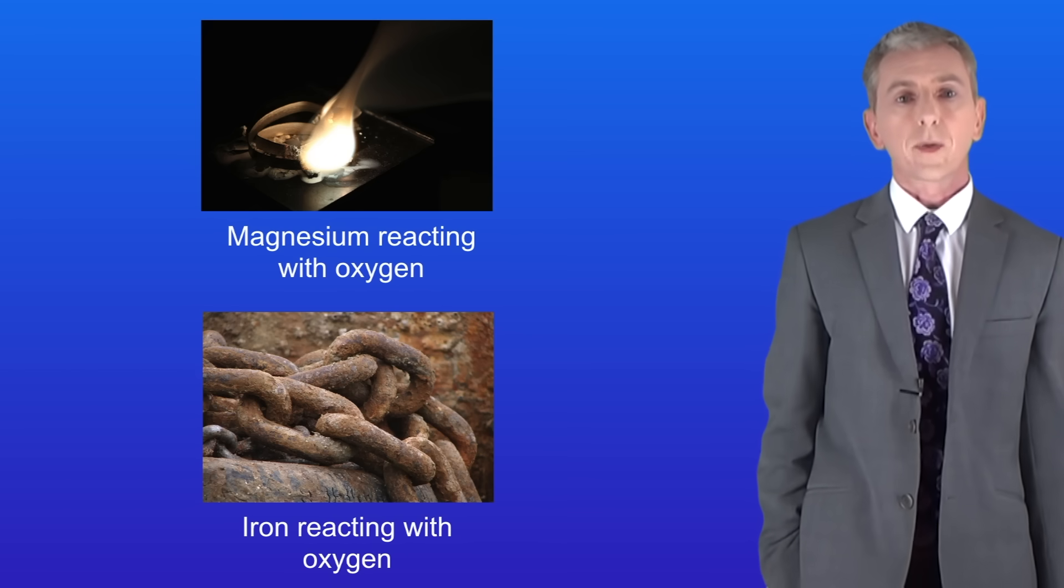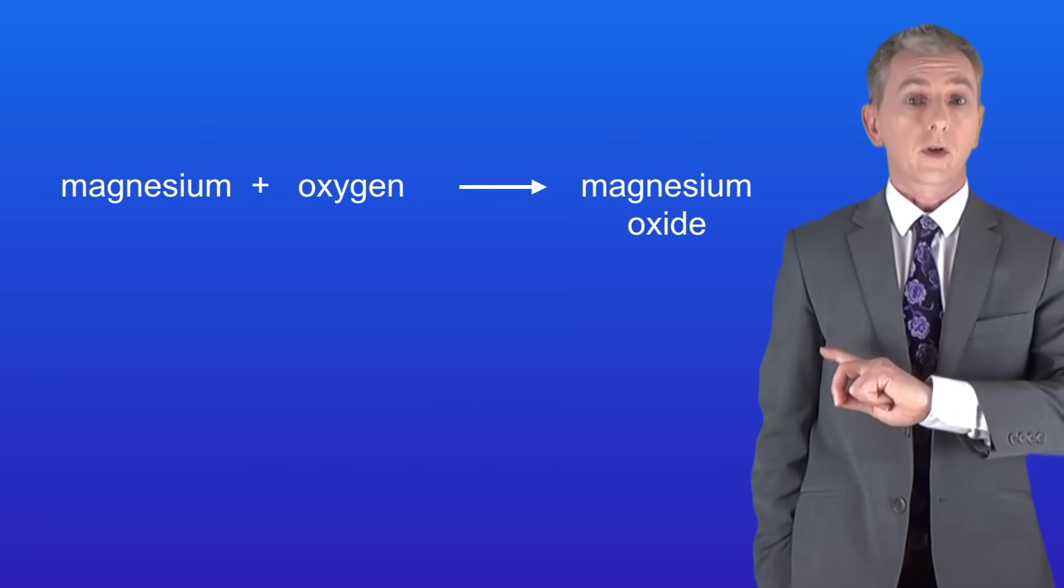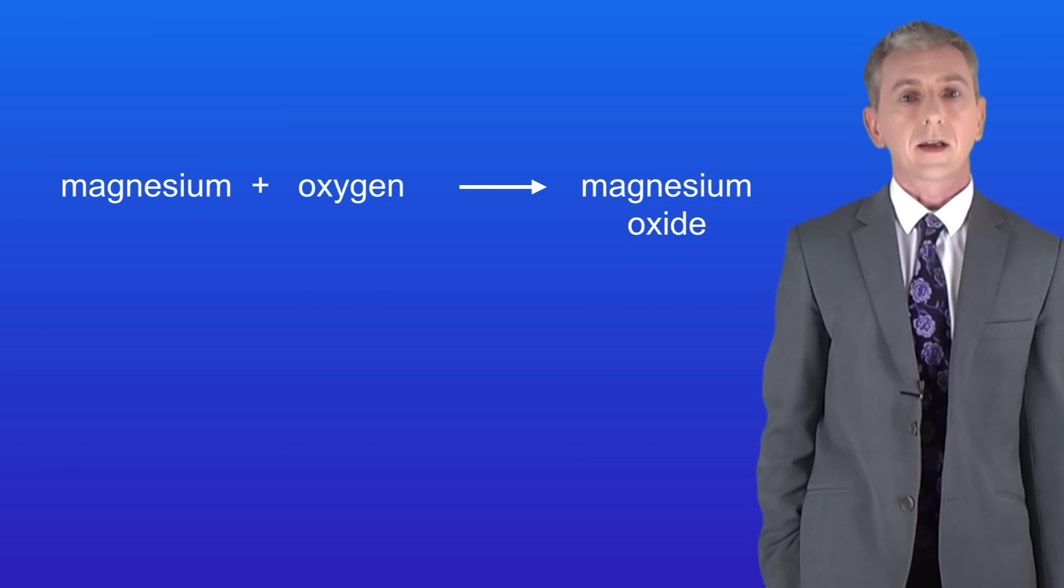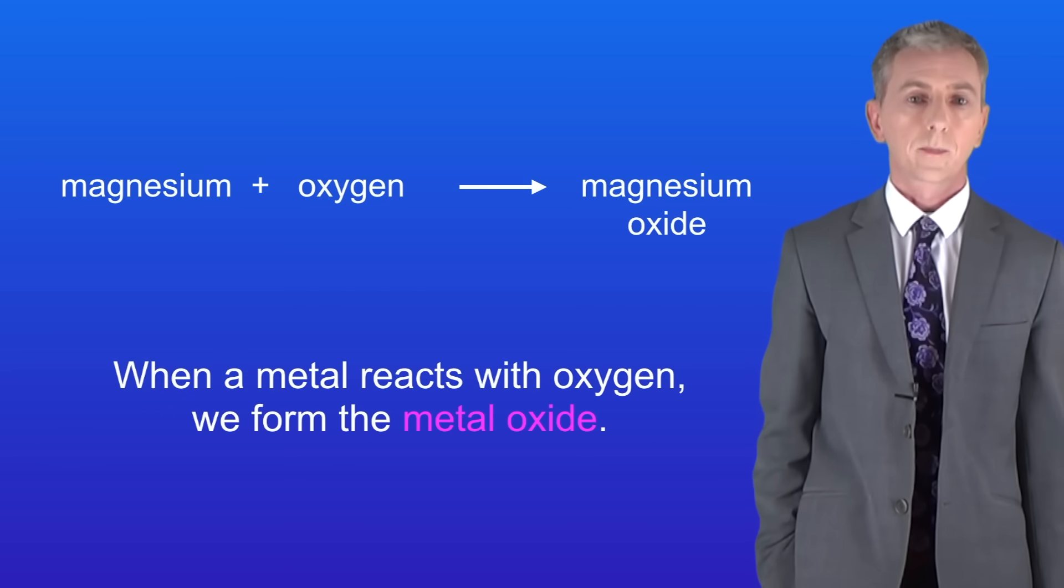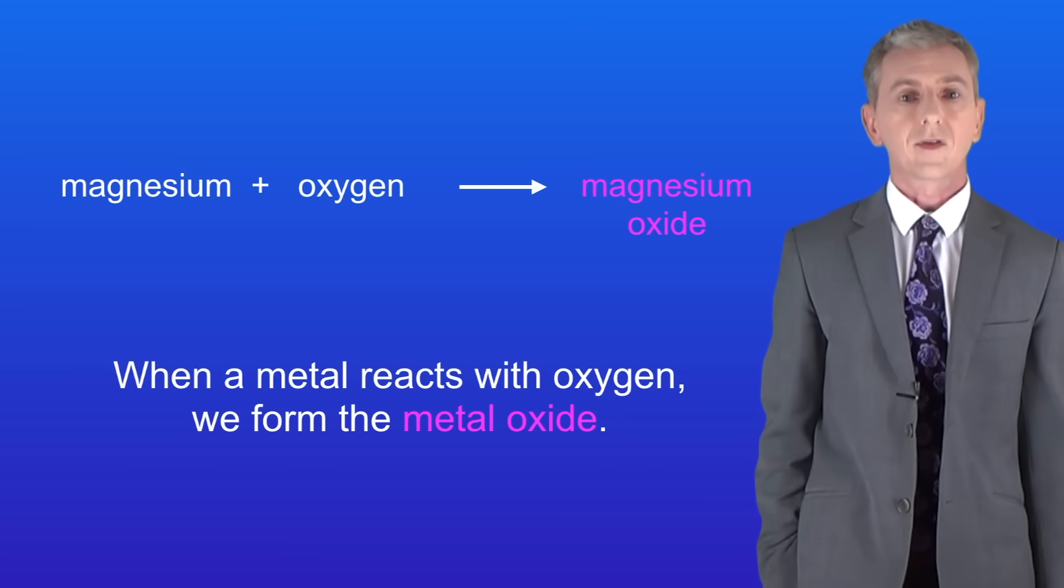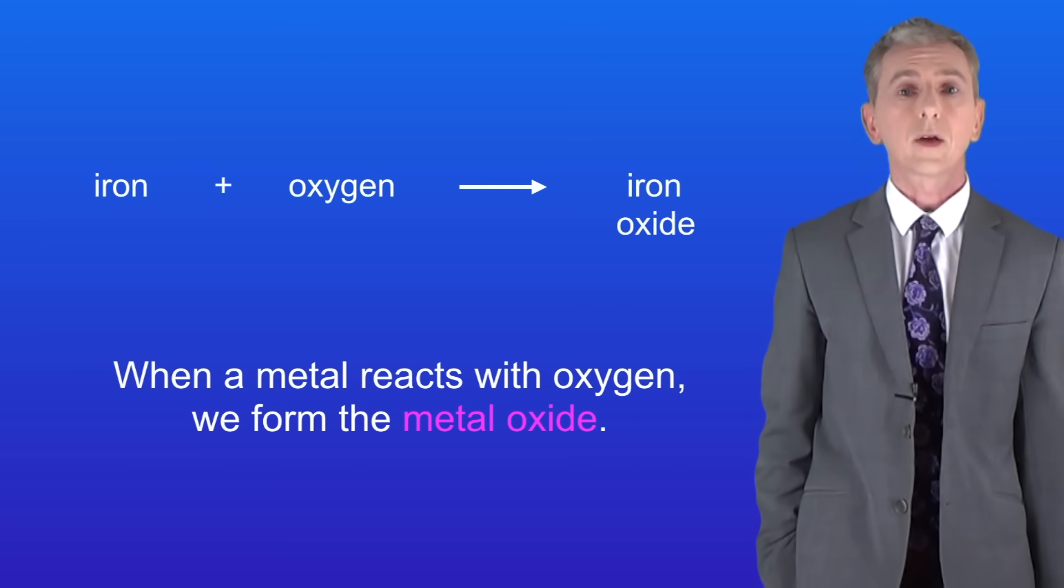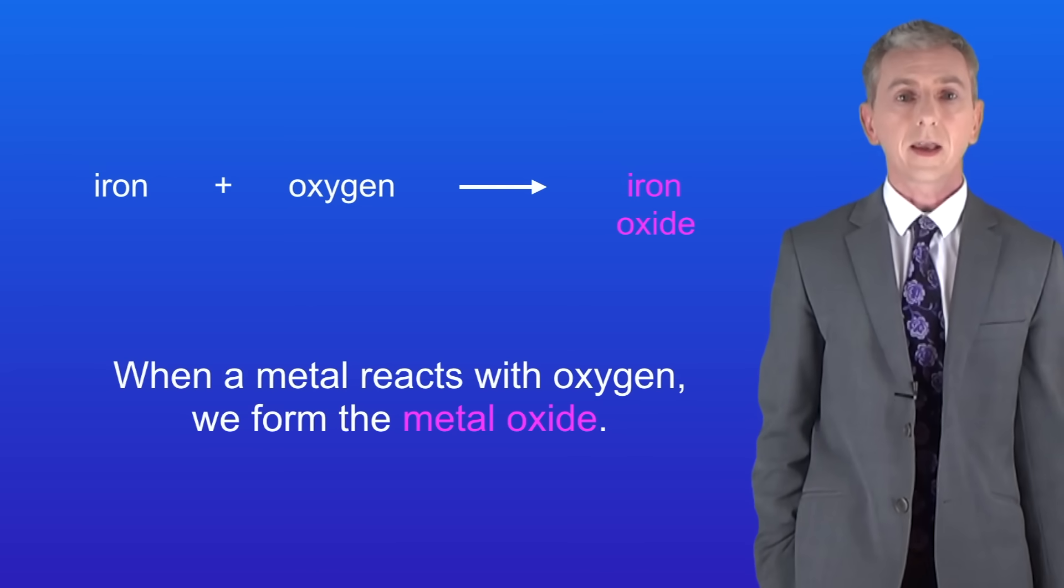So what actually happens when metals react with oxygen? This shows the chemical equation for the reaction of magnesium with oxygen. The first key idea to get is that when a metal reacts with oxygen we form the metal oxide. So in this case we're making magnesium oxide. Here's the equation for the reaction of iron with oxygen and again we're making a metal oxide, in this case iron oxide.